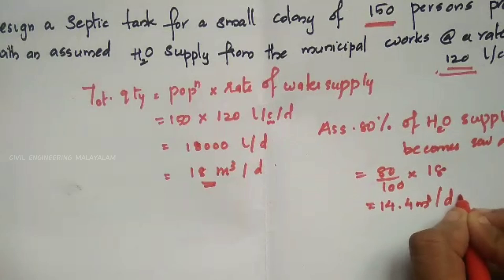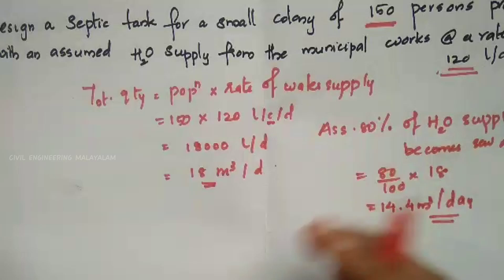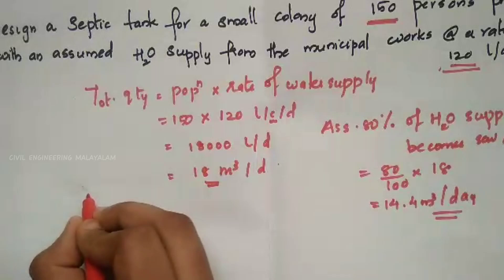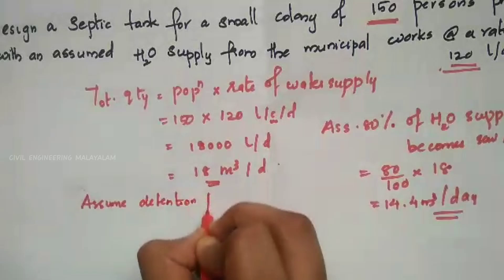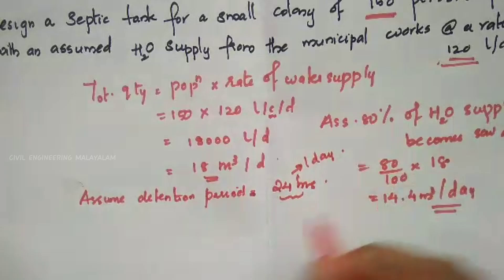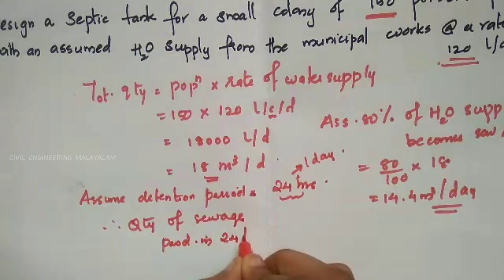The detention period range is 12 to 36 hours. We generally assume 24 hours. So the detention period is equal to 24 hours, which equals 1 day. Therefore, the quantity of sewage produced in 24 hours is 14.4 m³.